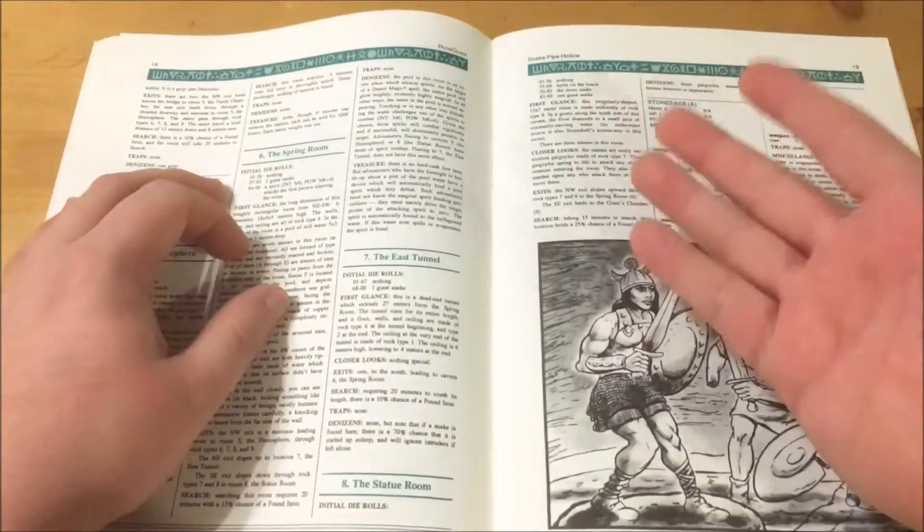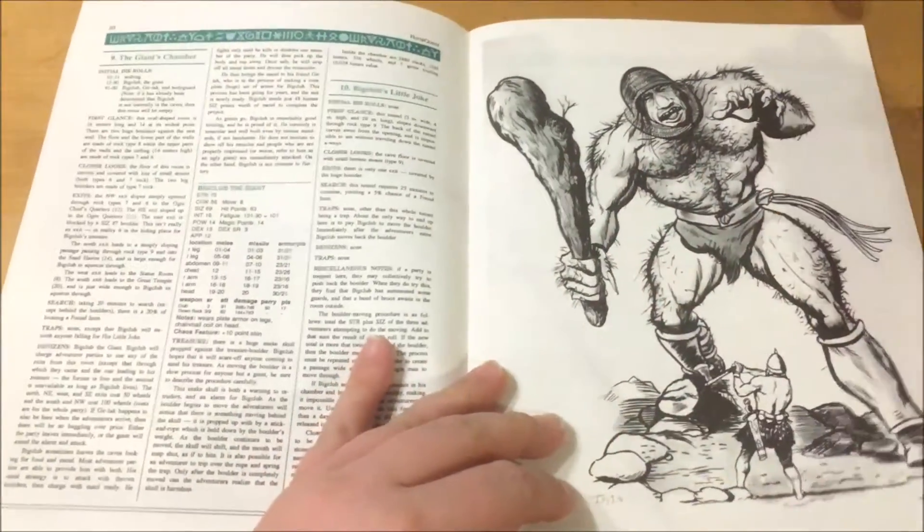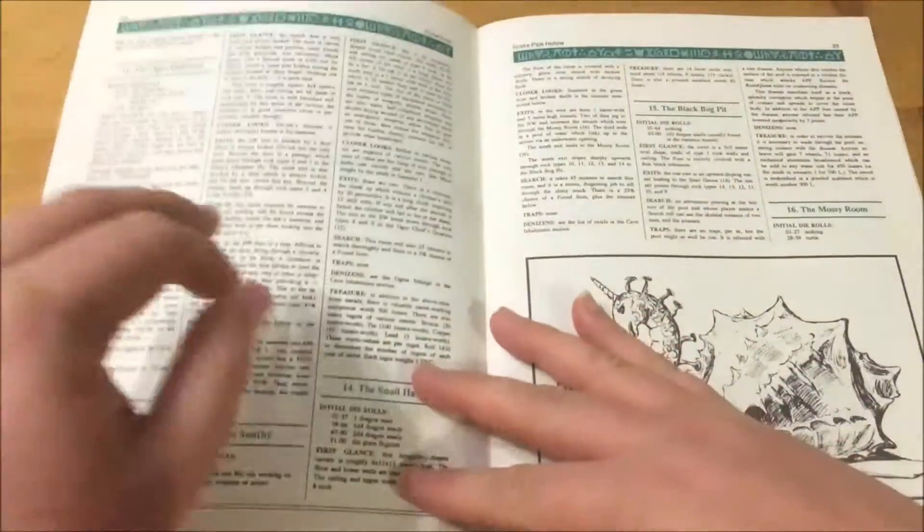The outer caves contain some threats such as Big Club the Chaos Giant, Dragon Snails and some ogres. Some of these can be parlayed with or can even be helpful.